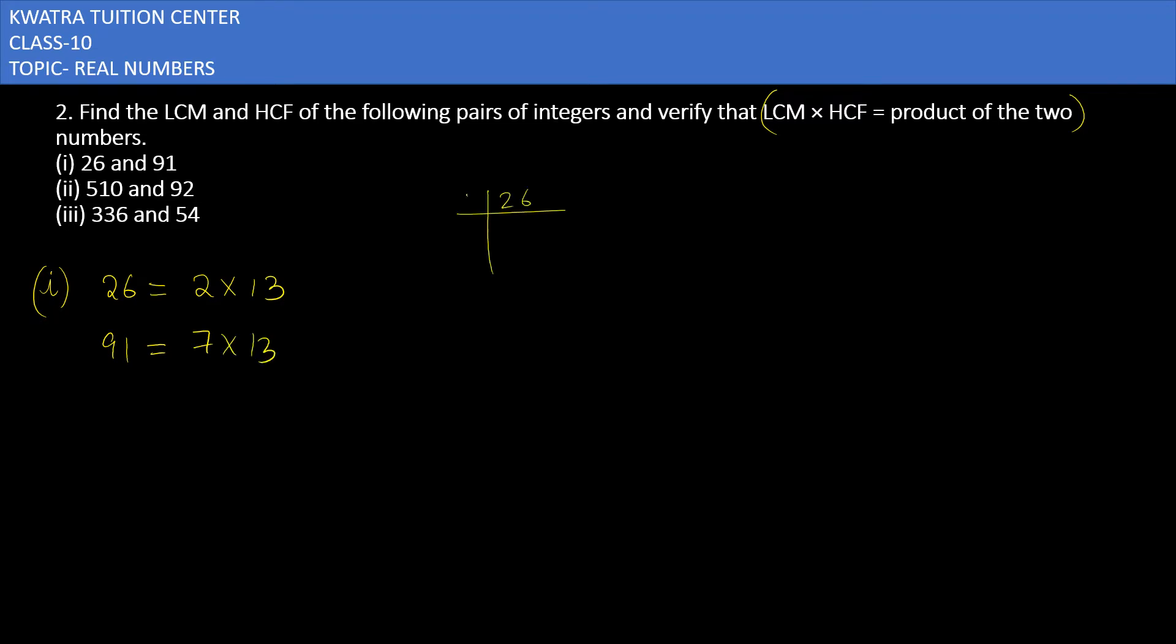How did we get this? From prime factorization. 26 is divisible by 2, giving 13, then 13 divided by 13 gives 1, so 2 × 13. Then 91 is divisible by 7 giving 13, then 13 divided by 13 gives 1 in the end.